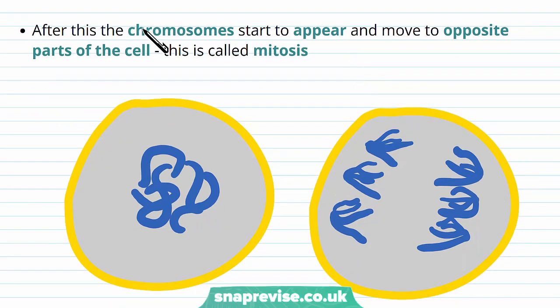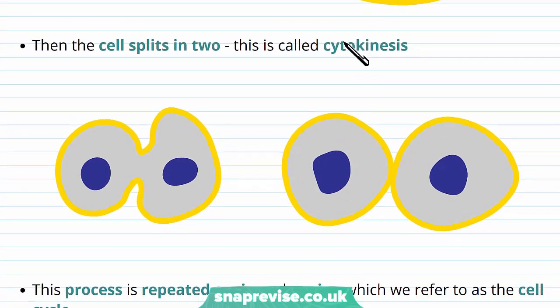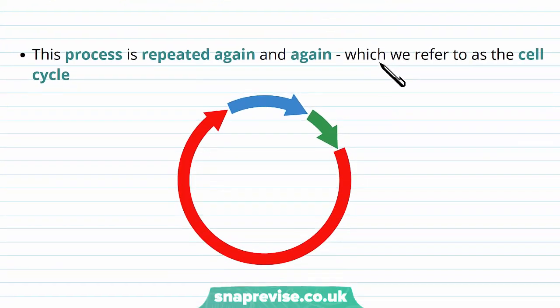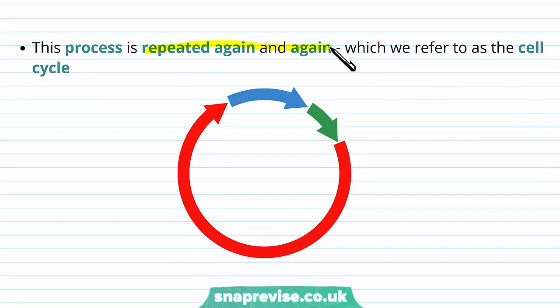Once interphase is finished and they begin dividing, the chromosomes start to appear and become visible, and then they move to opposite parts of the cell, and then the cell will start forming two separate nuclei. This is called mitosis. After mitosis, the cell splits into two, making the two new cells, and this is called cytokinesis. So these three phases get repeated again and again around a cycle. And obviously once you've formed two new cells, each of those cells will enter their own interphase and then go through mitosis again.